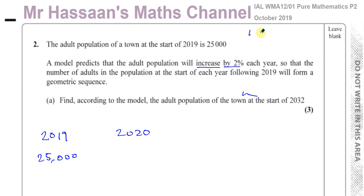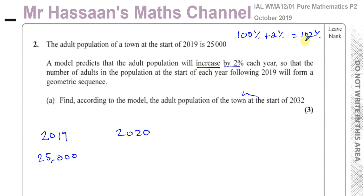When you increase something by 2%, it's going to be 102% of what it was before. As a decimal, that will be 1.02. So to increase a value by 2%, you multiply it by 1.02.